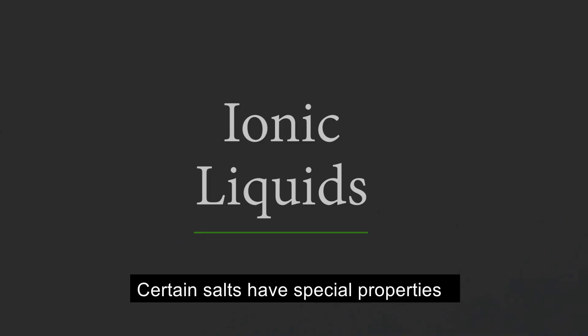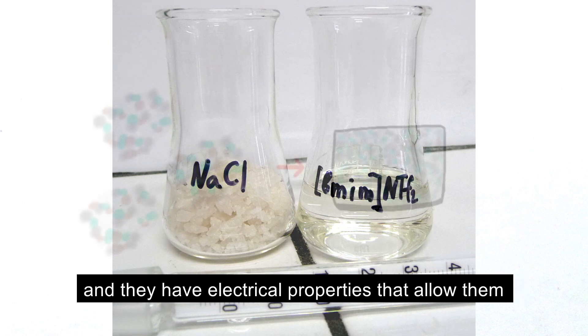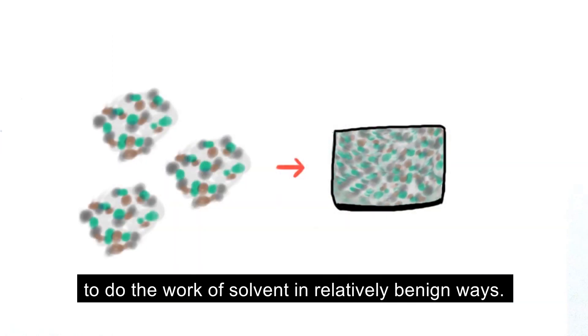Ionic liquids. Certain salts have special properties that allow them to become liquid at room temperature, and they have electrical properties that allow them to do the work of a solvent in relatively benign ways.